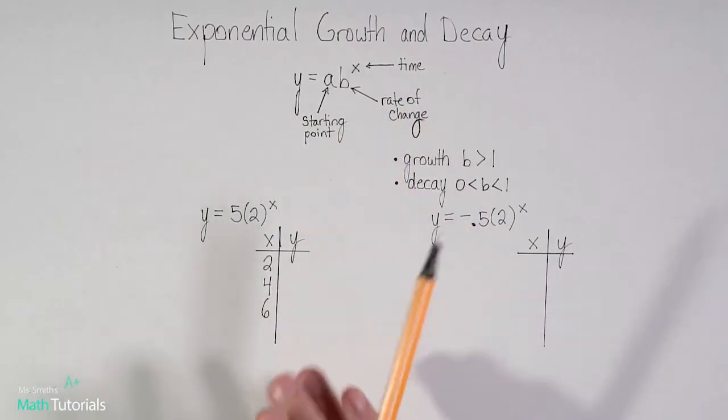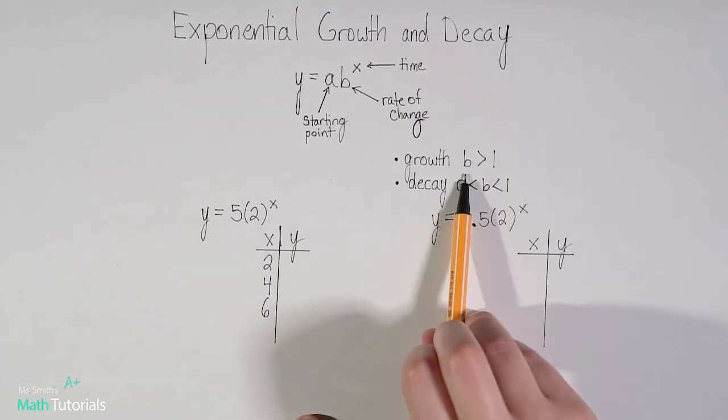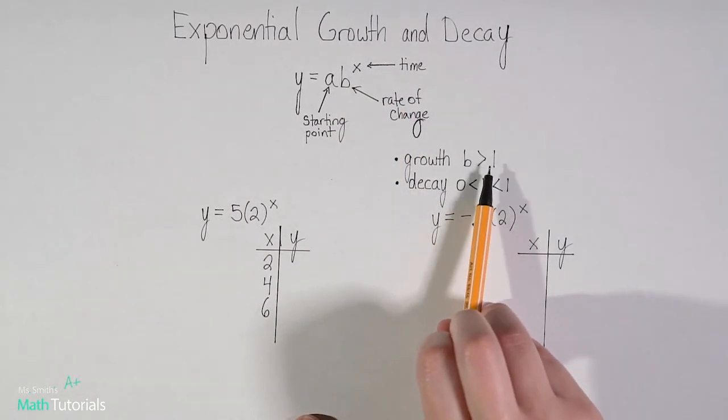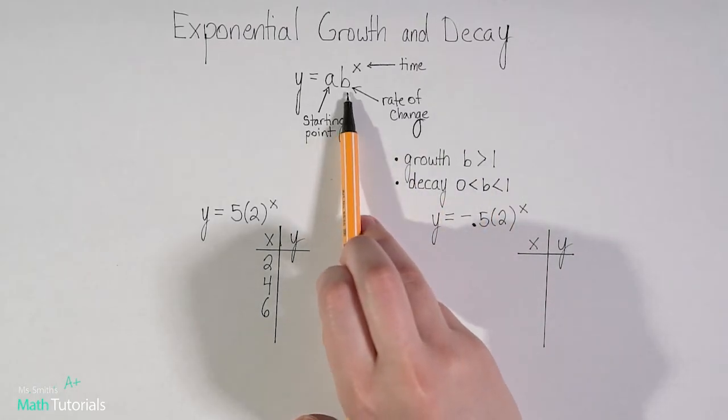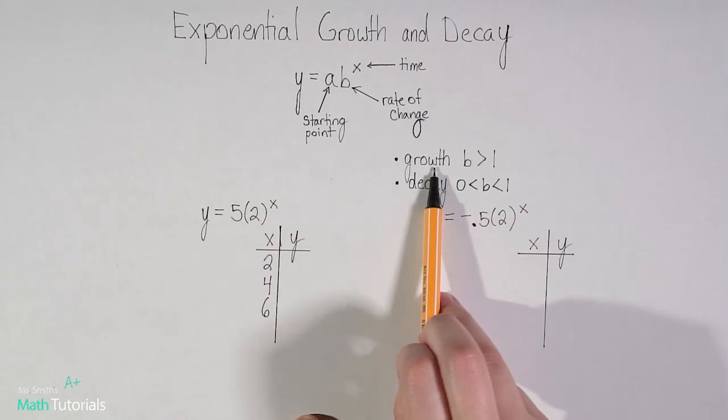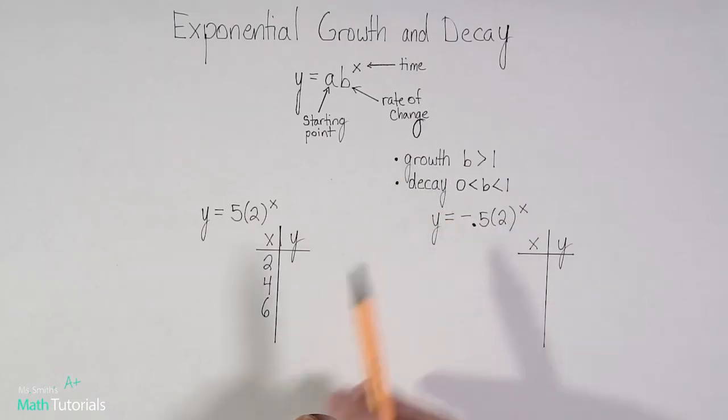This b value is very important. If the b is greater than 1, so if this value is greater than 1, it shows growth. We're talking about a growth formula. If b is essentially between 0 and 1, it would show decay. Keep those things in mind.